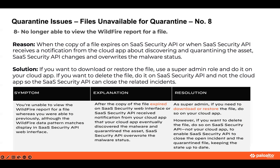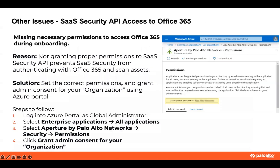These were all issues related to the quarantine actions. The last problem we will discuss is the issue with SaaS Security API access to Office 365. This is also related to not having correct permissions and is easy to resolve — just log in to the Azure portal as global admin and grant admin consent for your organization.